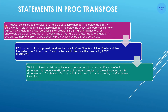In PROC TRANSPOSE there are three main statements: ID, BY, and VAR. The ID statement allows you to include the values of a variable as variable names in the output data set — it tells the procedure to use observation values as variable names in the output. If the variable in the ID statement is numeric, an underscore will be added at the beginning of the variable name by default. Instead of that default underscore, you can use PREFIX= or SUFFIX= to specify any character prefix or suffix.